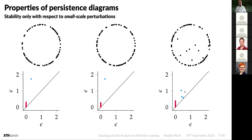This is unfortunate but can be remedied by using different filtrations or ensuring large-scale perturbations don't appear. I want to mention this because sometimes people new to the field have the wrong notion that persistence is super stable and that descriptors won't change no matter what. This is patently not true — a large-scale perturbation in your dataset can change the persistence diagrams quite considerably.